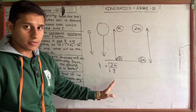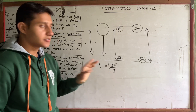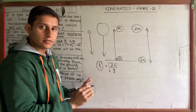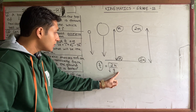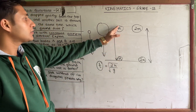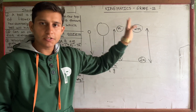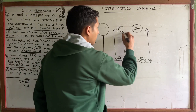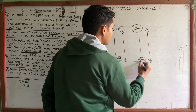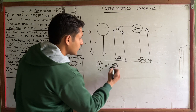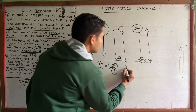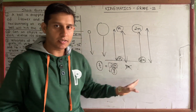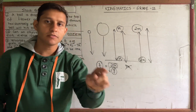Using the formula T = √(2H/G), we see that mass does not appear in this formula. So the time of flight is independent of mass — both stones will reach the ground at the same time, regardless of their different masses.